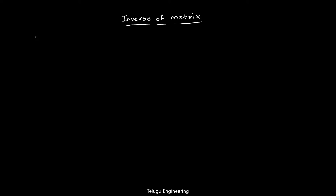Hello everyone. In this video we will find the inverse of a particular 3x3 matrix. Let's take a matrix M which is equal to [1, 2, 3; 0, 1, 4; 5, 6, 0].